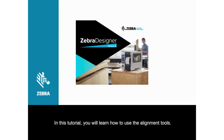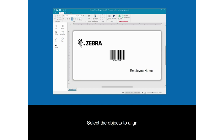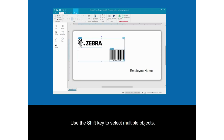In this tutorial, you will learn how to use the alignment tools. Select the objects to align. Use the shift key to select multiple objects.